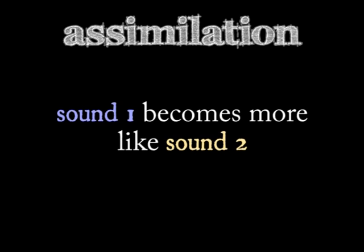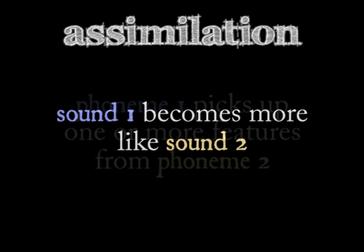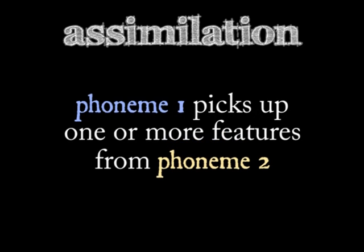Two sounds are involved in assimilation, and one of them becomes more like the other. The assimilating phoneme picks up one or more of the features of another nearby phoneme. The Latin root 'simil' is the key here — the two sounds become more similar.